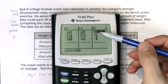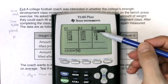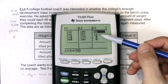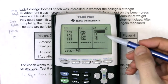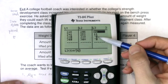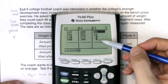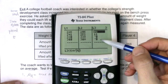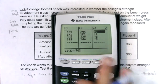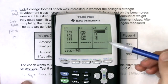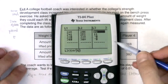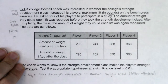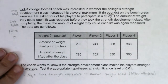It also worked for another player — 11 pounds is 11 pounds. But for two of the players it looks like they could actually lift less after they took the strength development class. So in terms of whether I'm going to reject or fail to reject the null, it's hard to say. Before we decide, let's set up our hypotheses. I'll move this up so we're looking at the data.